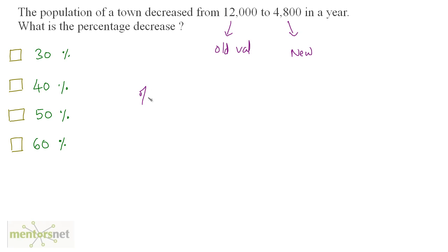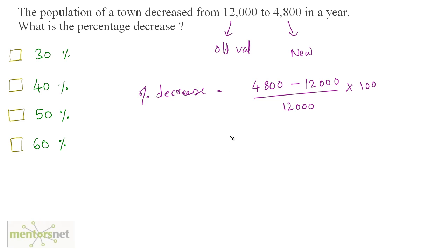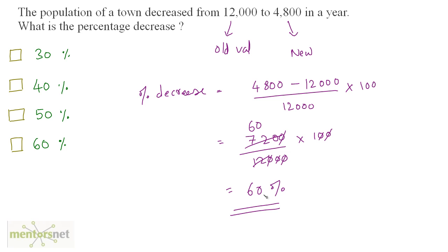Percentage decrease equals 4,800 minus 12,000, divided by 12,000, times 100. That gives −7,200 divided by 12,000 times 100. Cancelling zeros: 72 divided by 12 is 6, so 720 divided by 12 is 60. The result is −60%, meaning there is a 60% decrease in population.